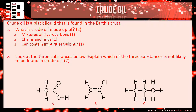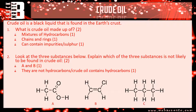Question two: which of the three substances is not likely to be found in crude oil? You're looking for the ones that aren't hydrocarbons. In this case, that's A and B — you get one mark for identifying both. Then explain why: because they are not hydrocarbons, or because crude oil only contains hydrocarbons.